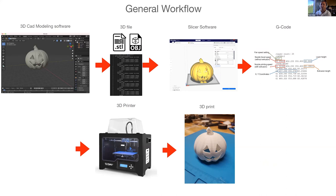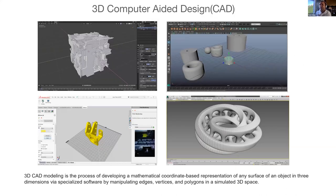Now let's talk about 3D computer-aided design, or CAD software. 3D CAD modeling is the process of developing a mathematical coordinate-based representation of any surface of an object in three dimensions via specialized software, by manipulating edges, vertices, and polygons in a simulated 3D space.